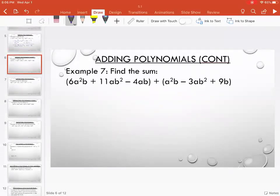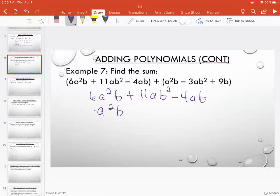Again, line them up underneath each other. A squared B is not the same as AB squared. So line them up right underneath each other. 9B is not the same as AB.